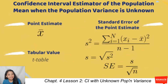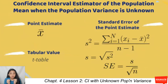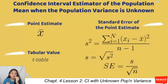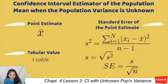The estimator of the population standard deviation is S. S-squared is computed by the summation of the squares of the differences of each data point from the mean, all over n minus 1. So your standard error would now become S over the square root of n.